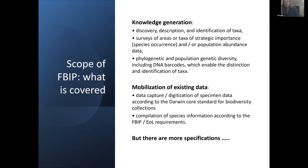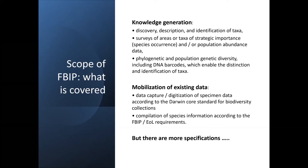So what does the FBIP cover? It covers two things: knowledge generation and mobilization of existing data. For knowledge generation, this is the discovery, description, and identification of taxa; surveys of areas or taxa of strategic importance, covering current and population abundance data; and phylogenetic or population genetic diversity, including DNA barcodes, which enable distinction and identification of taxa. For mobilization of existing data, it can be data capture or digitization of specimen data, and also compiling species information according to our standards — the Encyclopedia of Life requirements. That sounds quite straightforward, but there are a lot of other specifications and details.